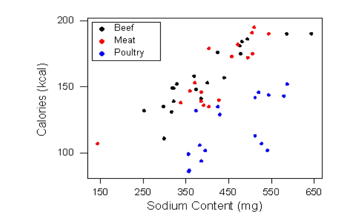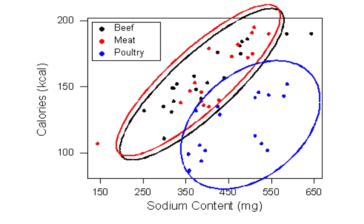Here is the labeled scatterplot, with the three different colors representing the three types of hot dogs as indicated. The display gives us more insight about the form of the relationship between sodium and calorie content. It appears that there is a positive relationship within all three types — we can generally expect hot dogs that are higher in sodium to be higher in calories, no matter what type we consider.